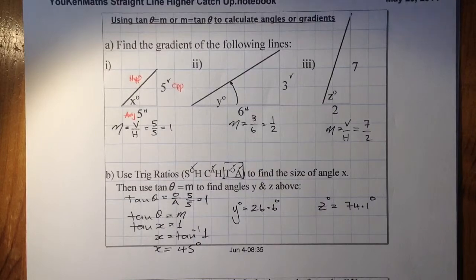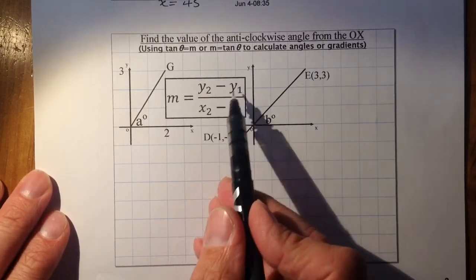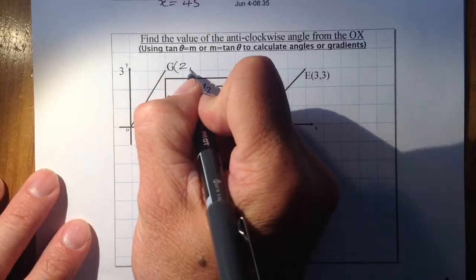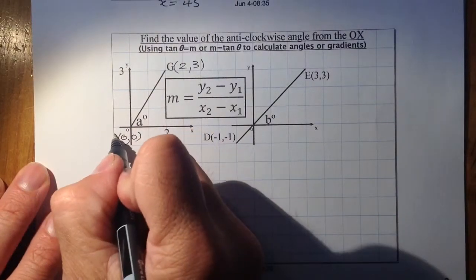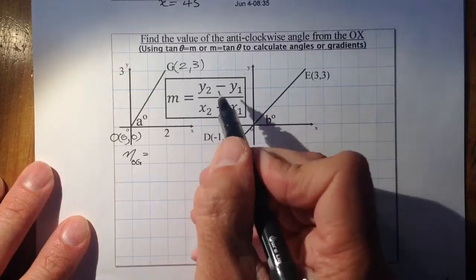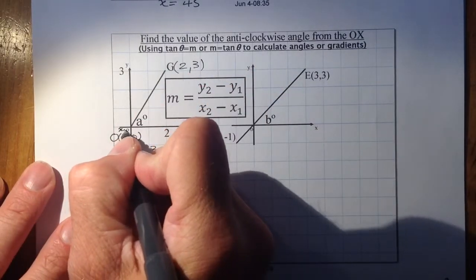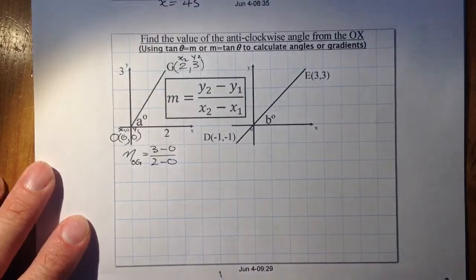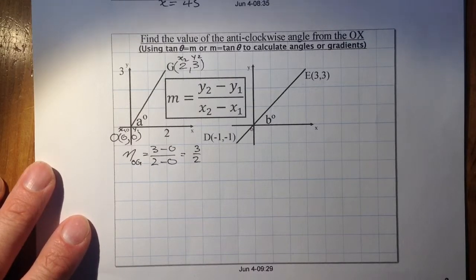Now I'll move on to using the gradient formula from National 5: gradient equals y2 minus y1 all over x2 minus x1. The coordinates of G are (2, 3) and the origin O is (0, 0). Working out the gradient of line OG: that's (3 minus 0) over (2 minus 0), which gives a gradient of 3 over 2. I could also have used vertical over horizontal to get that.